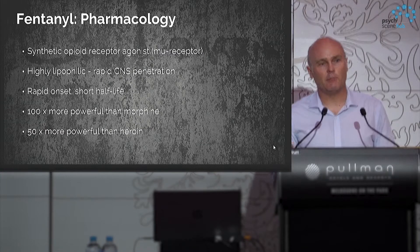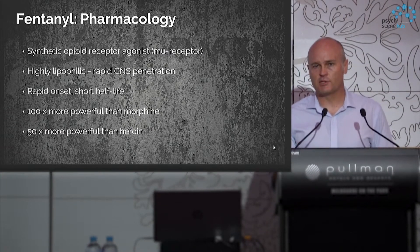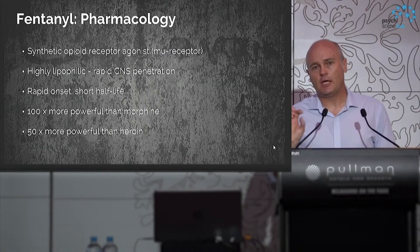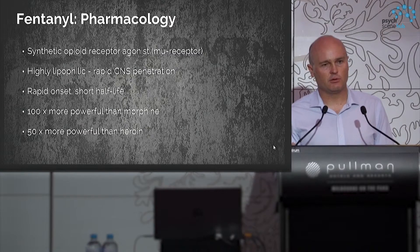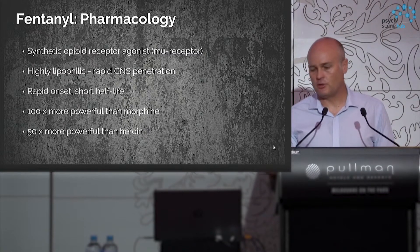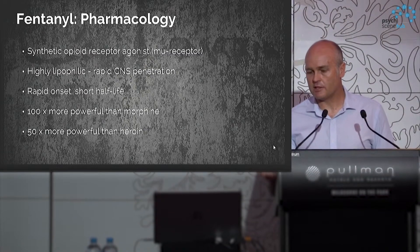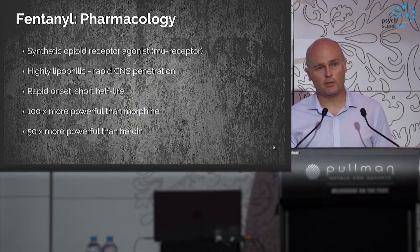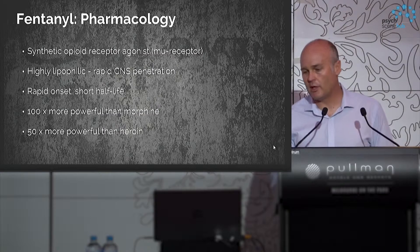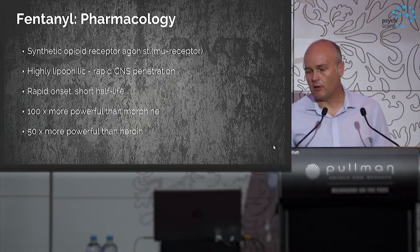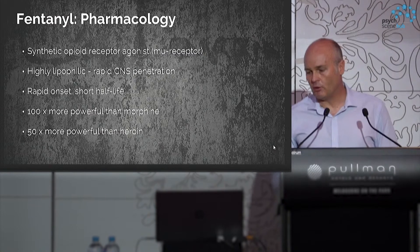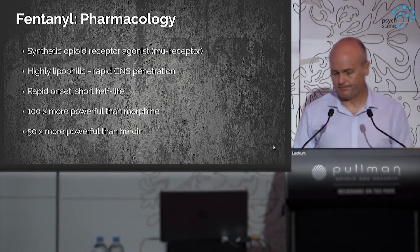Fentanyl is highly lipophilic, meaning it can cross lipid barriers. When administered, it gets straight into the central nervous system, producing a rapid effect. It's more potent than both morphine and heroin — approximately 100 times more potent than morphine and 40 to 50 times more potent than heroin.